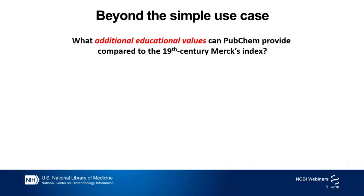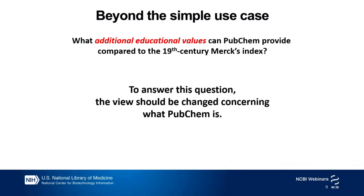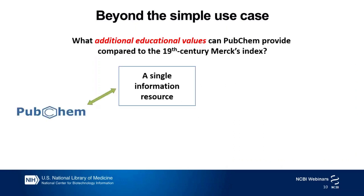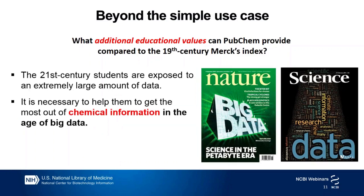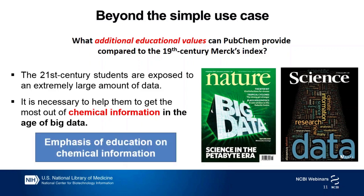The educational value of this activity is not very different regardless of what reference you use. Then, what additional educational values can PubChem provide compared to the 19th century Merck's Index? Most people view PubChem as a single information resource, but you can also view PubChem as a gateway to many information resources — providing access to all sources of chemical information scattered across hundreds of data sources. With that said, students are now exposed to an extremely large amount of data, so it is necessary to help them get the most out of this big chemical information, meaning that more emphasis in chemical education should be given to chemical information.